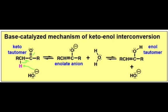First, hydroxide deprotonates the alpha carbon to form the enolate anion. Then the enolate anion deprotonates a molecule of water to form the enol-tautomer.